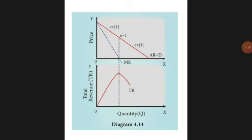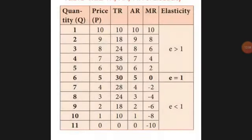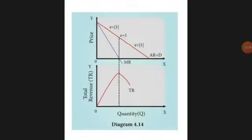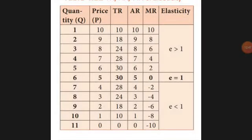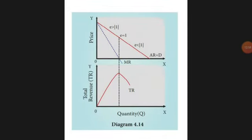When demand elasticity is less than one — from units 7 to 11 in the table — what happens? The MR curve goes negative, below the x-axis. The TR starts declining. Up to the maximum point TR was constant or at its peak, but now it begins to fall as we move into the inelastic range.